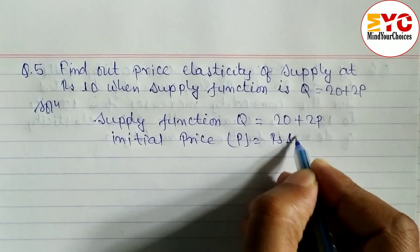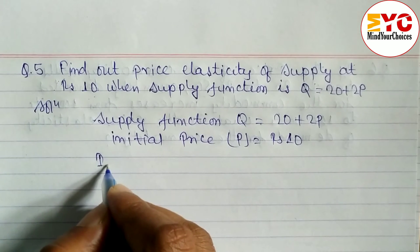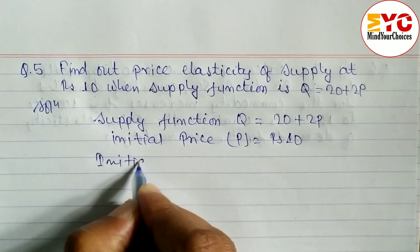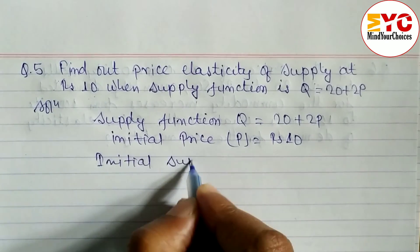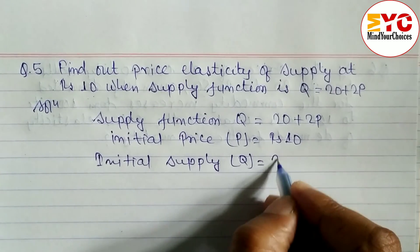First of all, we have to find out the initial quantity or initial supply. Initial supply Q is equal to 20 plus 2P.